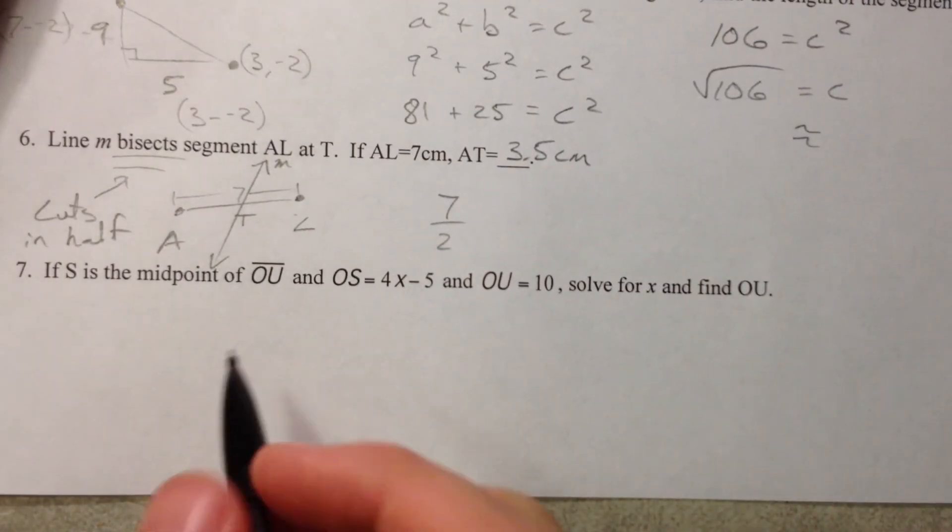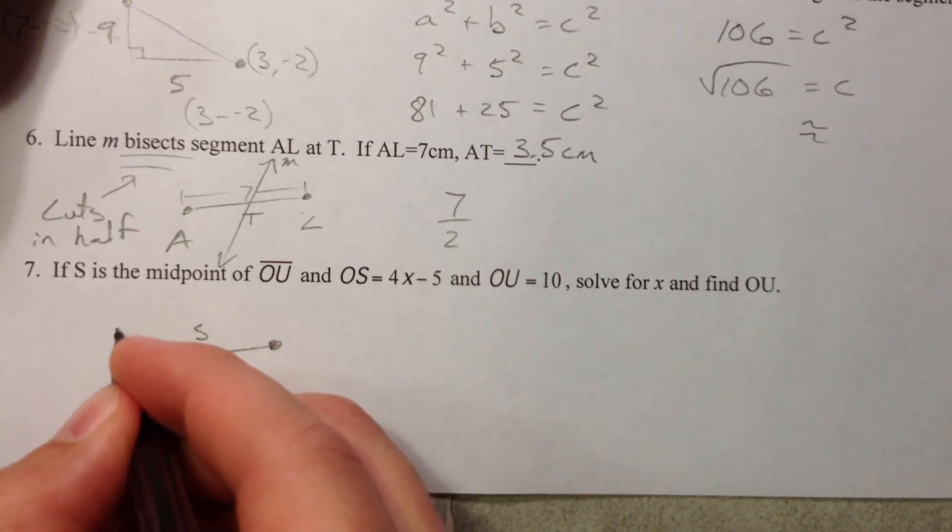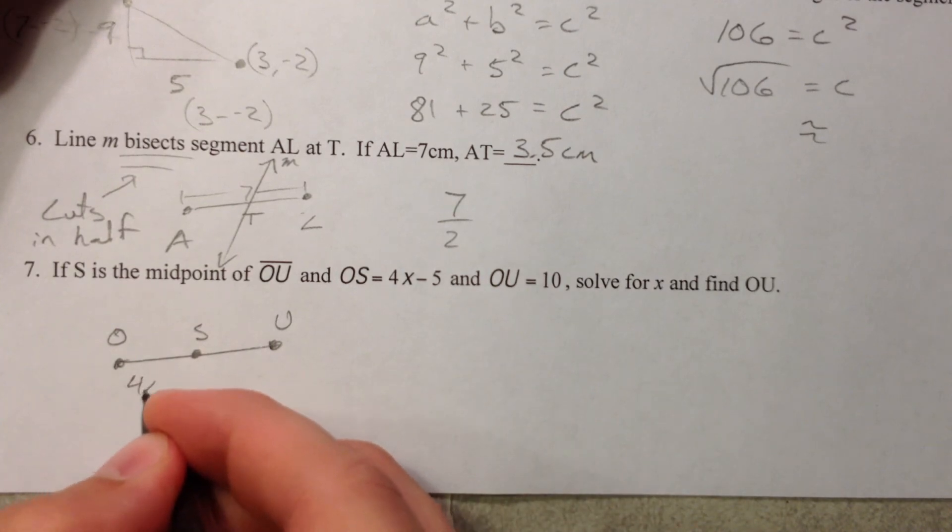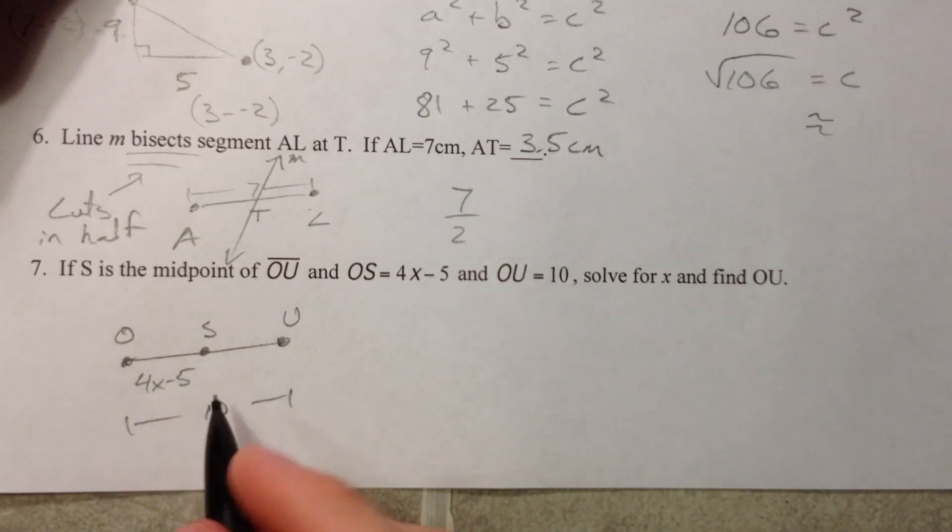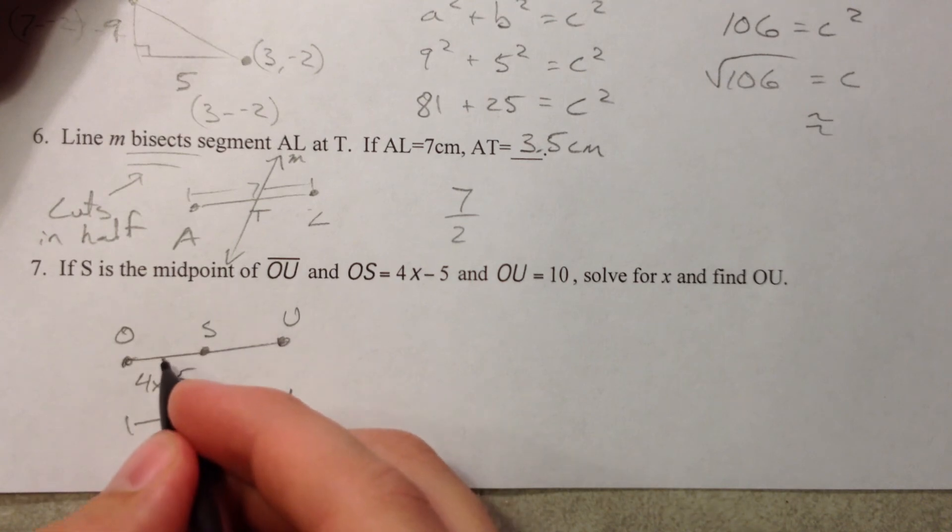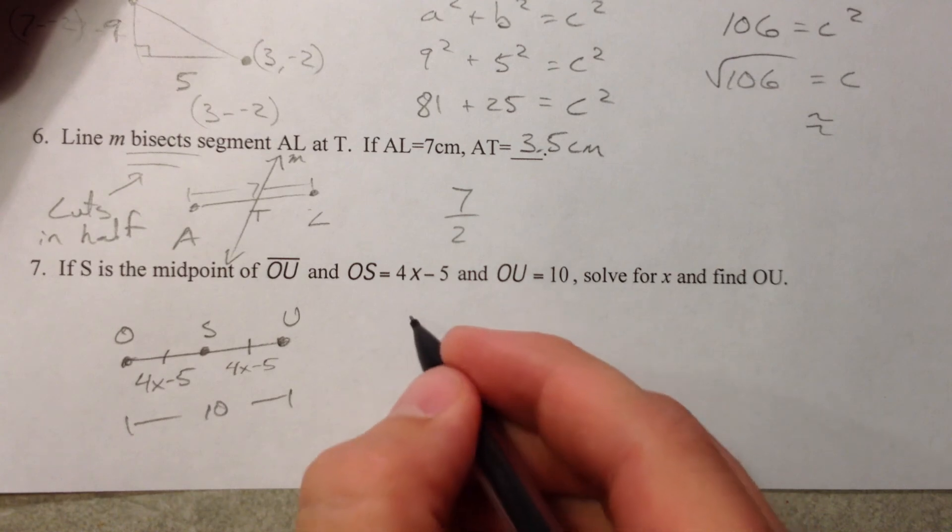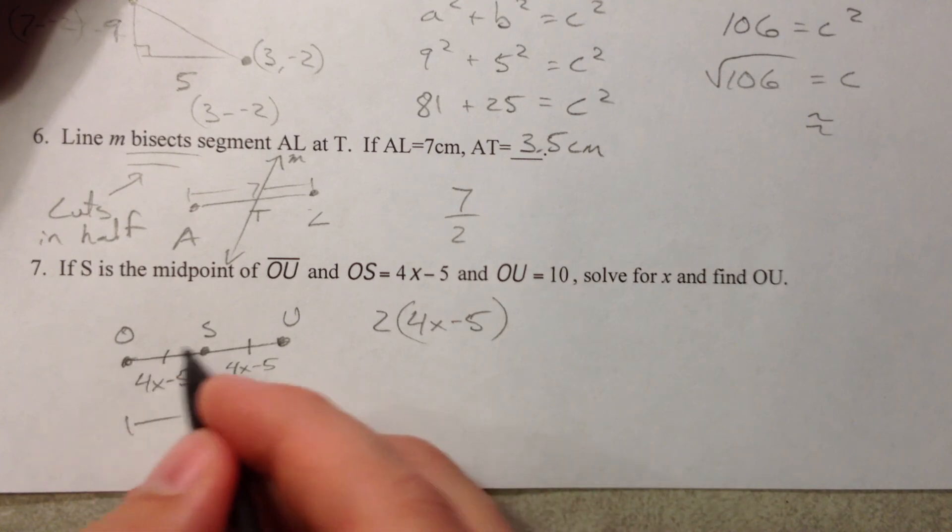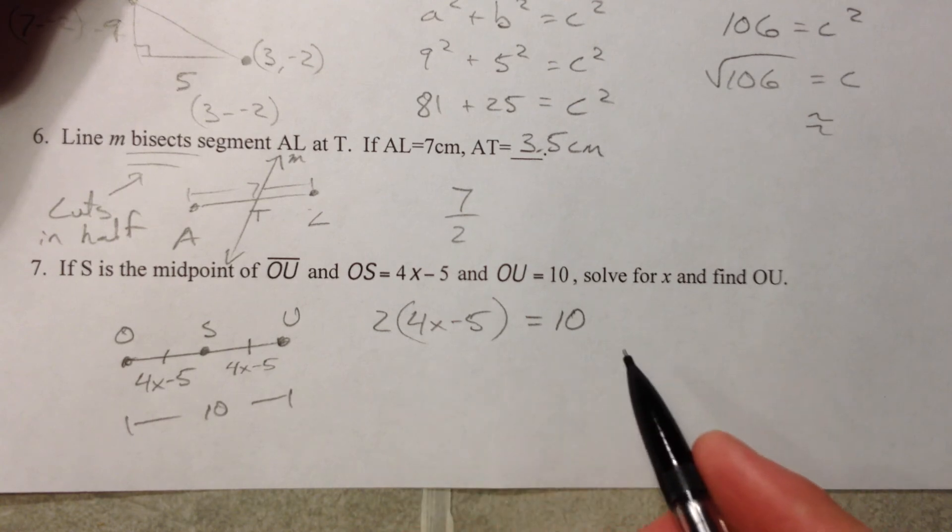Now S is the midpoint of OU. S O U, oh look OSU go Bucks. OS is 4X minus 5, OU is 10. Solve for X, find OU. And so because it's the midpoint you know that this side has to be the same as this side. So you could say 4X minus 5. And so 4X minus 5, two of those because if I double half of it I have to get the 10. If I double that or do 4X minus 5 plus 4X minus 5, however you want to think about it, I will get 8X minus 10 equals 10.